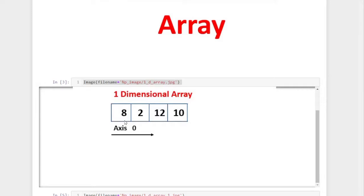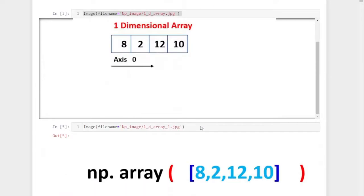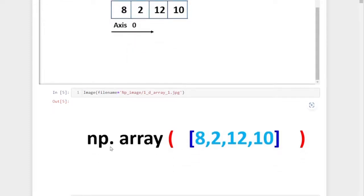The elements are 8, 2, 12, and 10. So if you want to create the same in the NumPy library, we use the command np.array, then open the parentheses, and within the parentheses we enter the numbers in a list: 8, 2, 12, and 10.